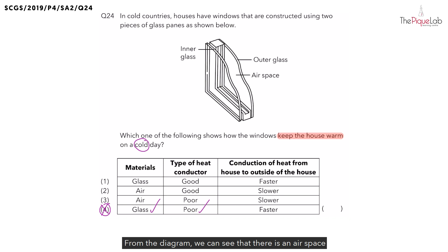From the diagram, we can see that there is an airspace that gets trapped between the two glass pieces. When we take a look at the two glass pieces, we have an inner glass and an outer glass.